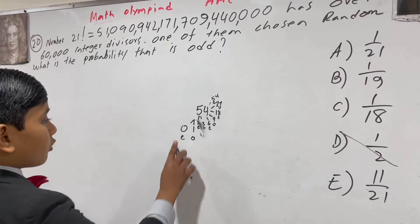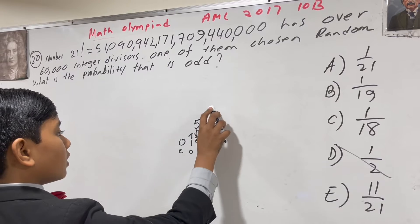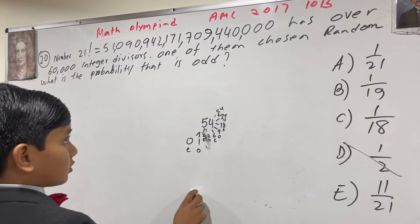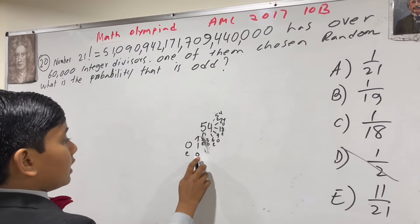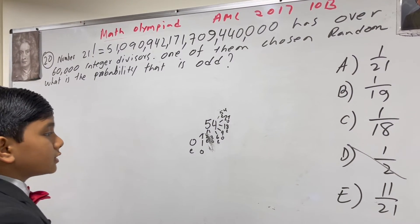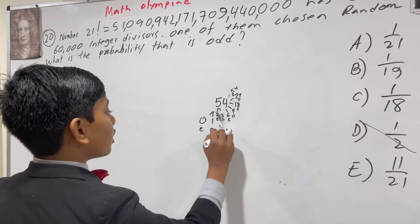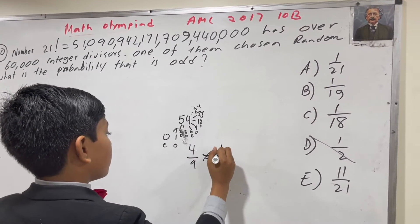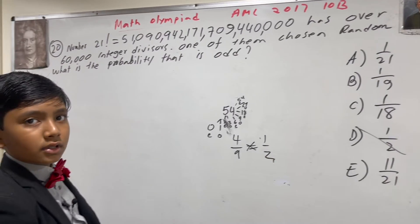You could also have, for example, 27 which is odd, and then finally 54 which is even. So now there were five even divisors and four odd divisors. So the chance here to get an odd one is 4 out of 9, which is not equal to one-half, even though it's certainly close.